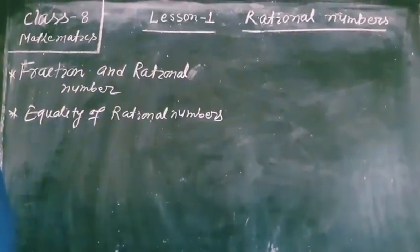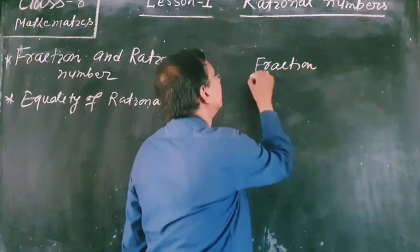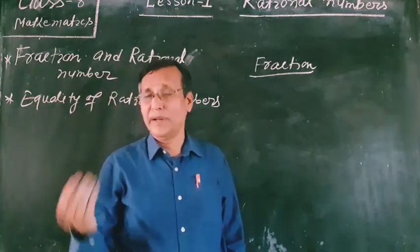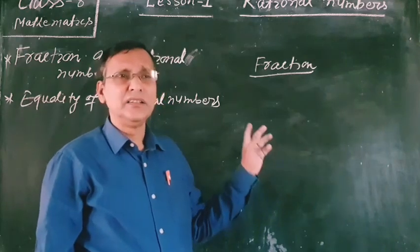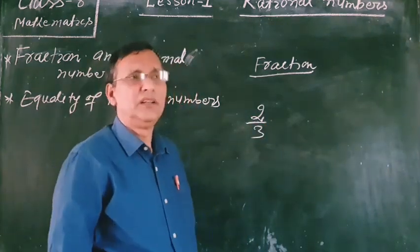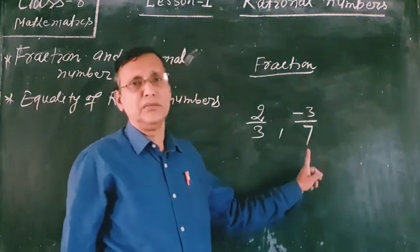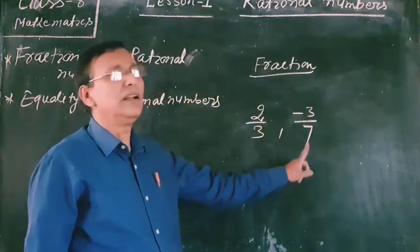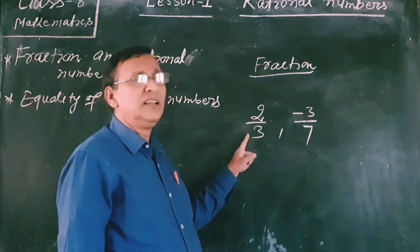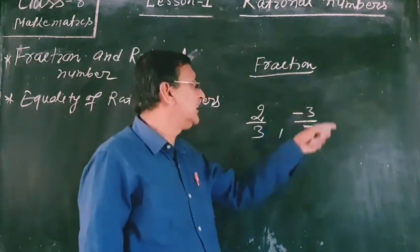The first topic is fractions and rational numbers. We have already learnt that a number of the form a by b is called a fraction, where a and b are natural numbers. So 2 by 3 is a fraction, but minus 3 by 7 is a rational number. The only difference is that a and b in the case of a fraction are natural numbers, while a and b in the case of a rational number are integers.